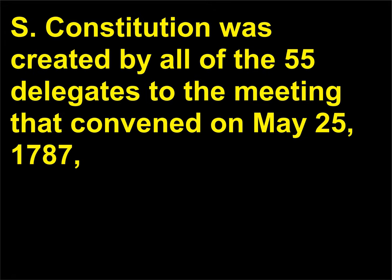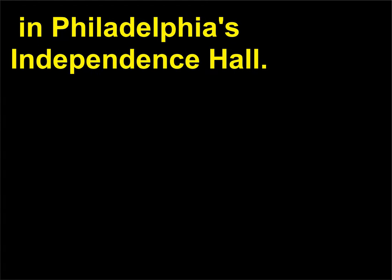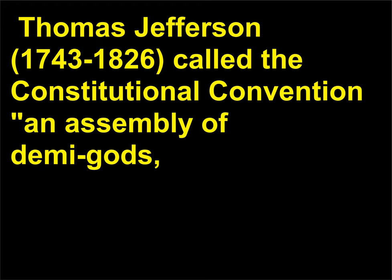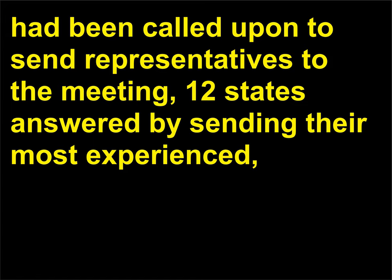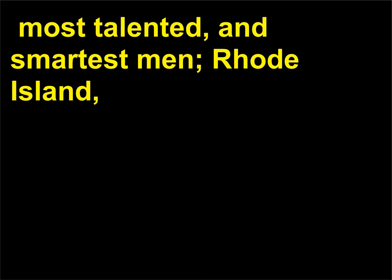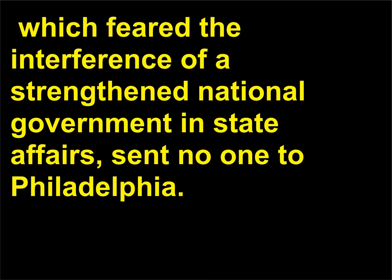Who wrote the U.S. Constitution? It was created by all of the 55 delegates to the meeting that convened on May 25, 1787, in Philadelphia's Independence Hall. Thomas Jefferson, 1743–1826, called the Constitutional Convention an assembly of demigods. And with good cause — the delegates were the young nation's brightest and best. When the states had been called upon to send representatives to the meeting, 12 states answered by sending their most experienced, most talented, and smartest men. Rhode Island, which feared the interference of a strengthened national government in state affairs, sent no one to Philadelphia.